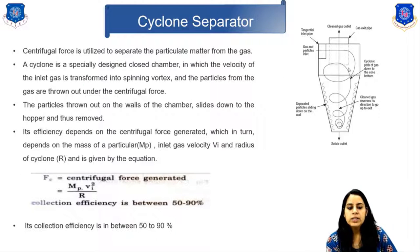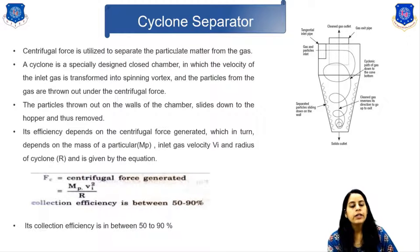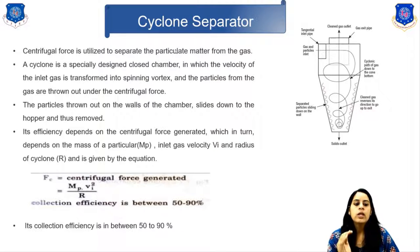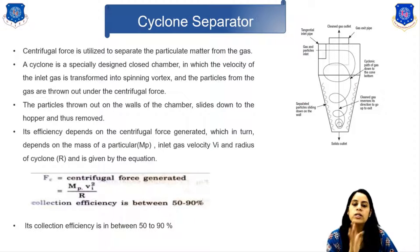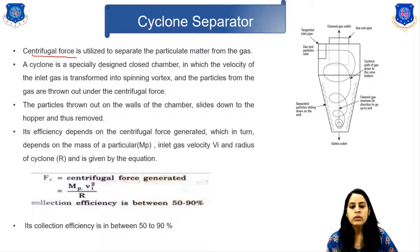The second equipment is the cyclone separator. Since centrifugal force is much greater than gravitational force, smaller particles down to 10 to 15 micrometers can be removed, compared to greater than 15 micrometers in the gravity settling chamber. Here, centrifugal force is utilized to separate the particulate matter from the gas.